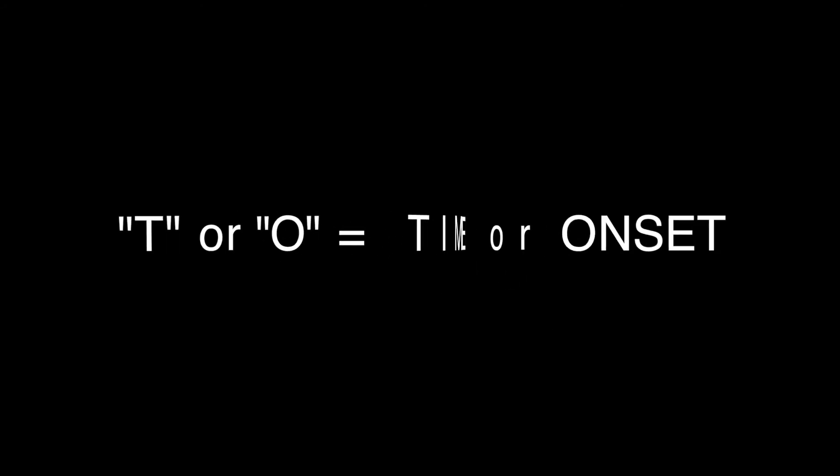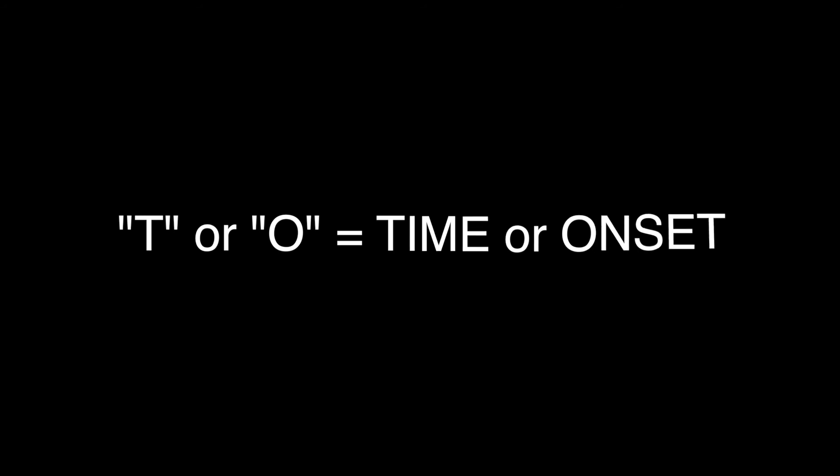T and O — some assessments will have the O at the beginning for the OPQRST, while some will combine it with the T or the time. So onset or time: when does it begin? How long does it last? How frequent is the pain? Does something make the pain start? Also, is there a history of chronic pain?